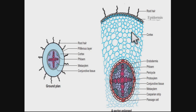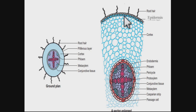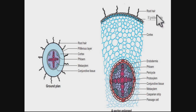First, if we talk about dicot root, like stem, we have an epidermis. Epidermis is always, in most cases, a single layer — in few cases multilayer, for example in the case of orchid. Epidermis cells are parenchymatous in nature, and some of the epidermis cells get elongated to form root hair. The function of root hair is to increase the surface area for maximum absorption of water and minerals.